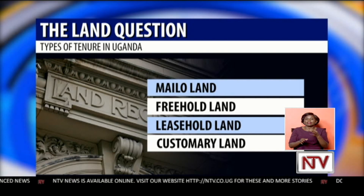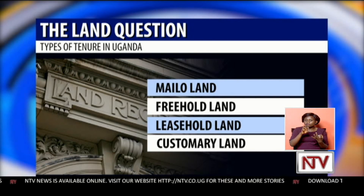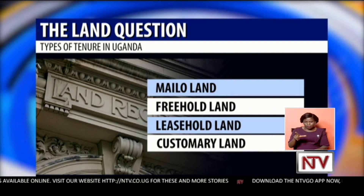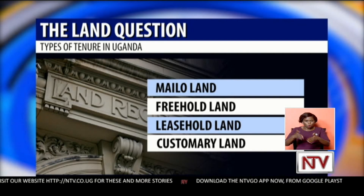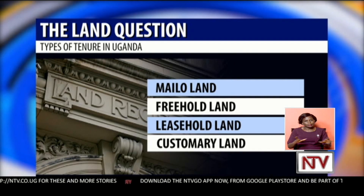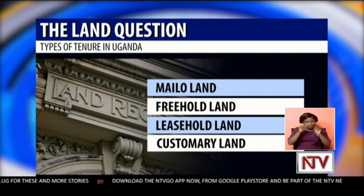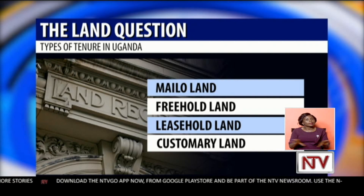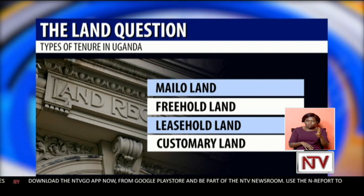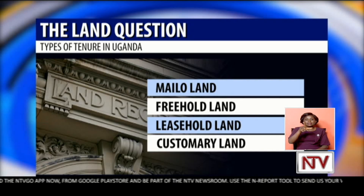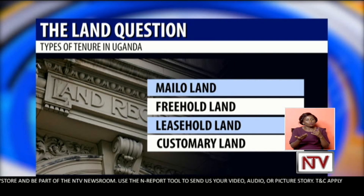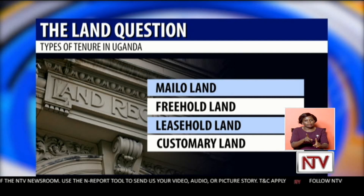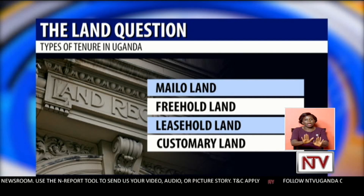The third is the freehold tenure system, where individuals own land, have land titles, and can bequeath the land. The fourth and final one is the leasehold tenure system, under which the owners can give leases to tenants to develop their land.